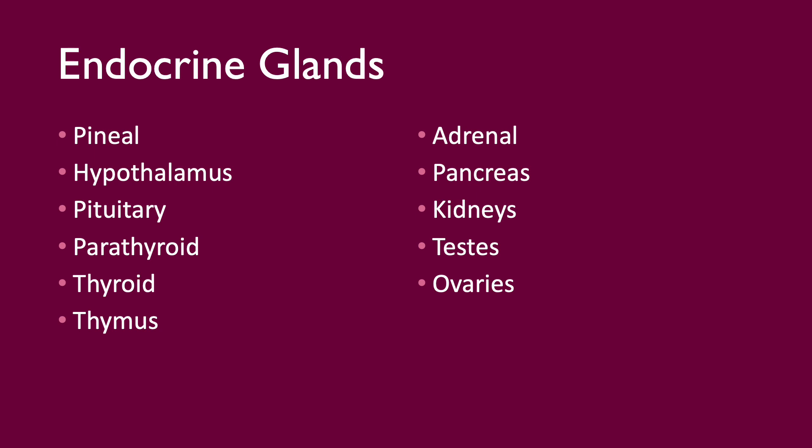There are many endocrine glands in the body. The endocrine system controls and regulates bodily functions. The glands include the pineal gland, the hypothalamus or at least part of it, the pituitary gland, the parathyroid, the thyroid, the thymus, the adrenal gland, the pancreas, the kidneys, testes and ovaries.